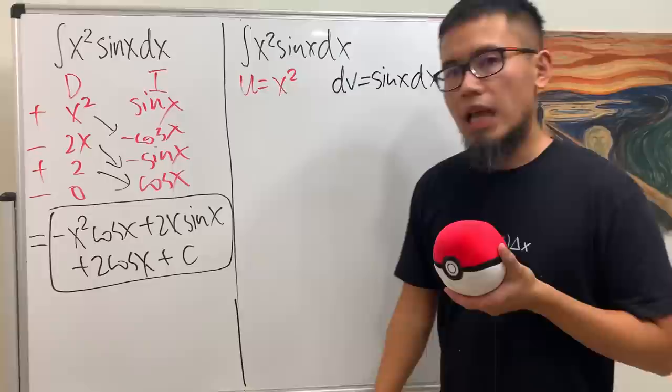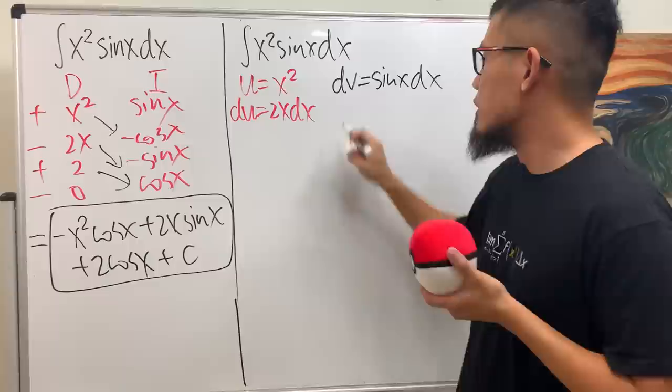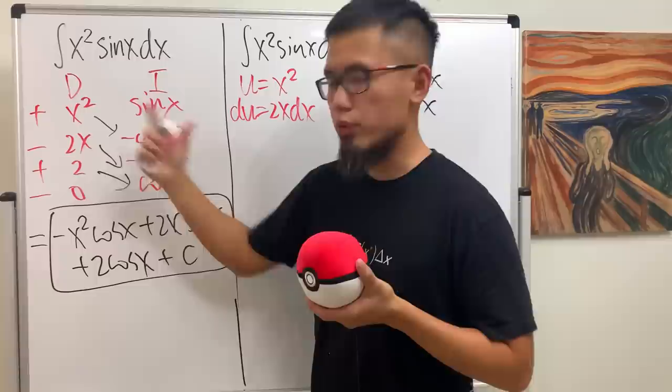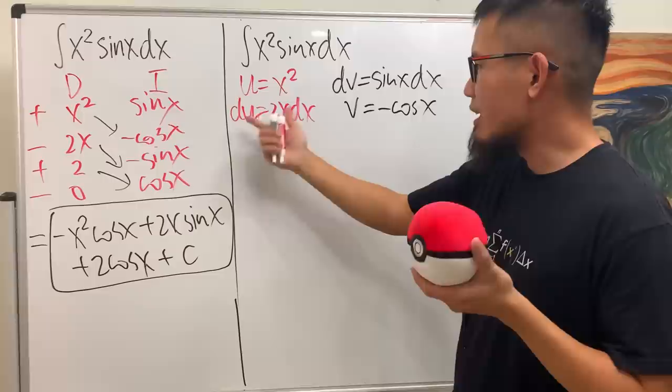Let me pick U to be x squared, and let me pick dV to be sine x dx. We differentiate U, so dU is equal to 2x dx. We integrate dV, so we get V is equal to negative cosine x. Isn't this the same as the first two rows of the DI table? Right here I have to write down U, dV, dU — a lot of things.